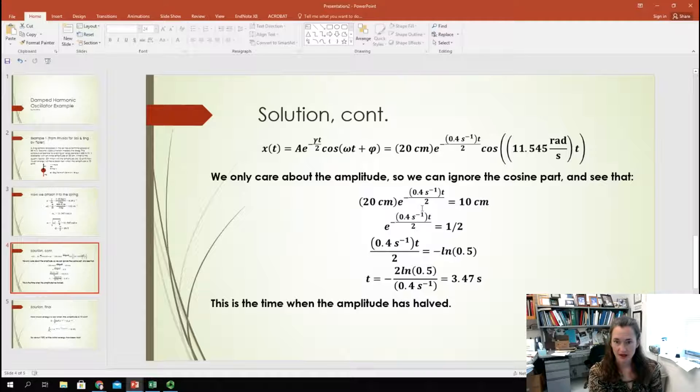Okay? So, solving for that, I can divide both sides out by 20, and I have e^(-0.4*t/2) is equal to a half. And now, to simplify that and solve for the time, I take the natural log of both sides to cancel out my exponential. And when I do that, I end up with 0.4 times t over 2 is equal to minus natural log of a half. Now, doing just a little bit of algebra, I can simplify and see that t is equal to minus 2 times the natural log of a half divided by 0.4. And when I solve for that, I end up with 3.47 seconds. So, that's how long it takes until the amplitude is halved.